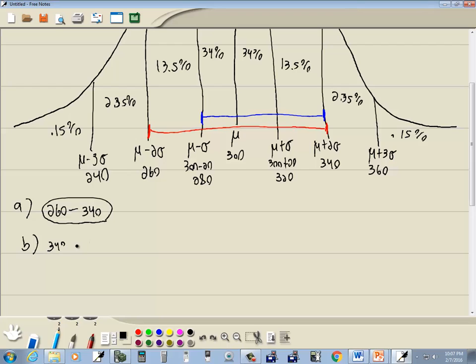So I'm going to have 34% plus 34% plus 13.5%. So that gives us 68 plus 13.5. Let's see, 68, 78, 81.5. And that would be our answer.